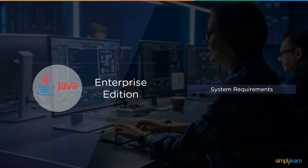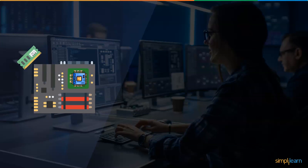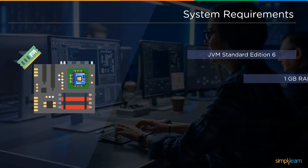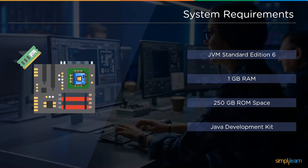Now we will learn the system requirements to install Java Enterprise Edition. The basic requirements are: you should have the Java Virtual Machine from Standard Edition 6 or higher; your local system should have at least 1 GB of RAM; your system should have at least 250 GB of ROM space available; and you should have the Java Development Kit installed.